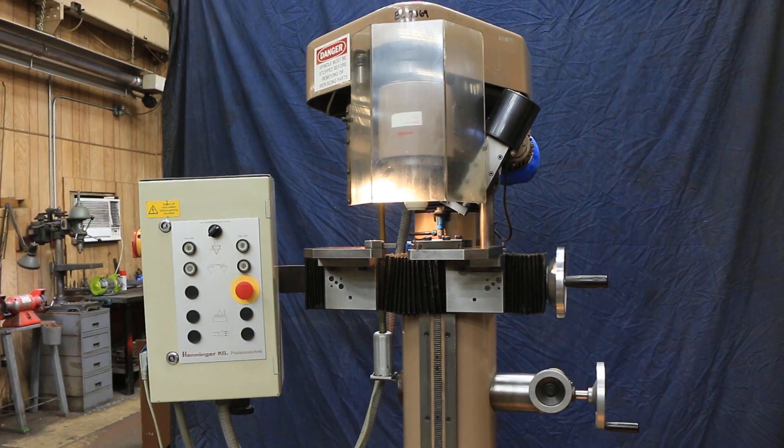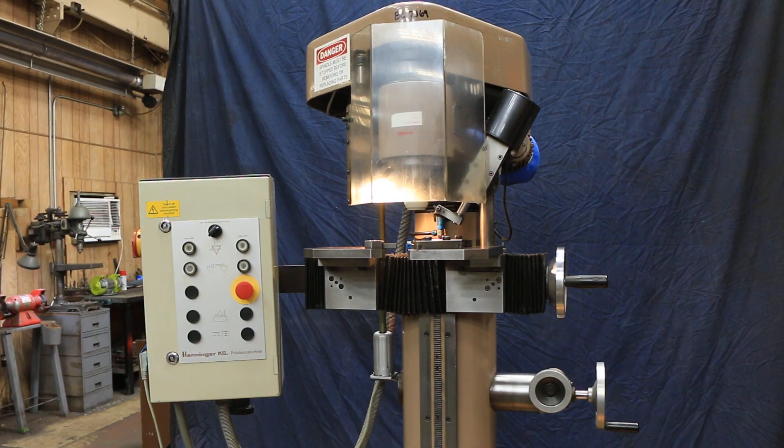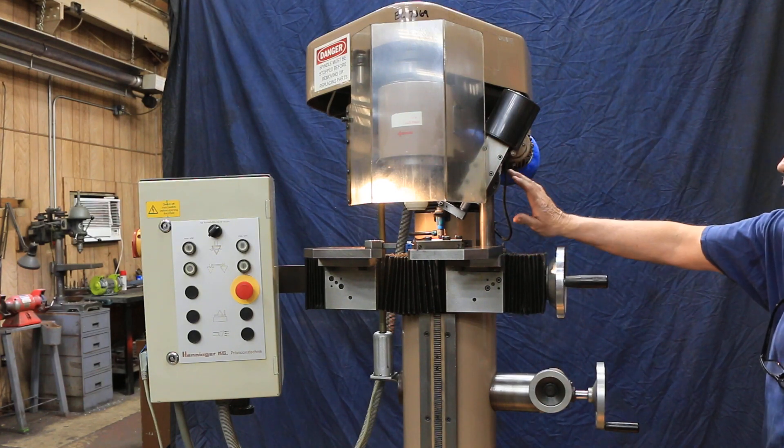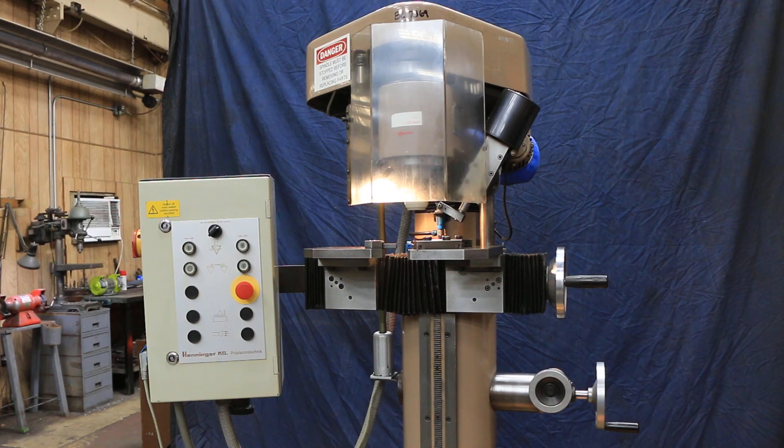That's the Henninger center grinder. You see here the dresser going up and down. Over here there's a couple of bolts that you can slide this in and get it close to your wheel in order to dress it.